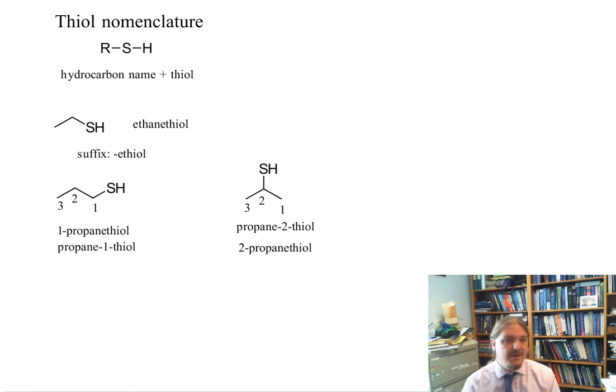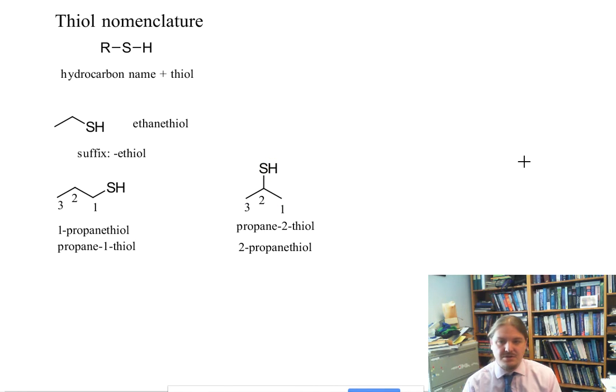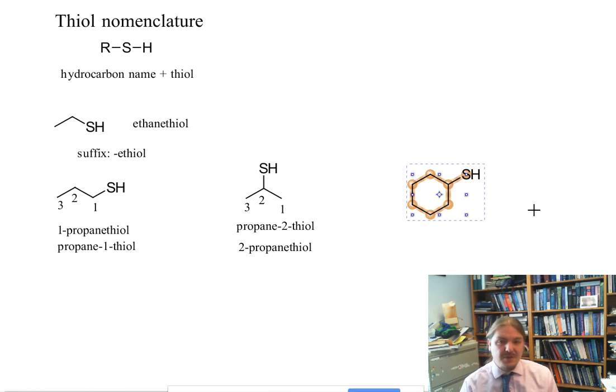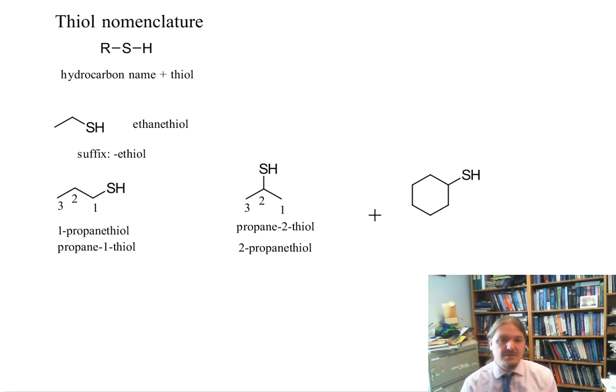Let's take a minute and put up another structure here and name it. If you want to pause the video for a couple of seconds and work out the name of this structure, go right ahead. If we were starting with this compound and it did not have the thiol on it, we would name this cyclohexane. So we start with cyclohexane and then we just add thiol to that name. This is cyclohexanethiol.